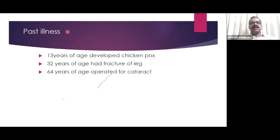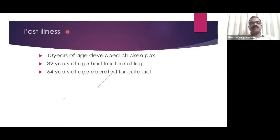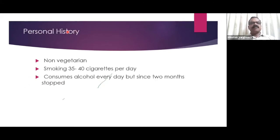Past illness: the patient had chickenpox at age 13, a fracture of the leg at 32, and cataract surgery at 64. Family history revealed that both brother and mother were diabetic, brother and father were hypertensive, one brother was mentally ill, and another had bronchial asthma — indicating a strong miasmatic trend.